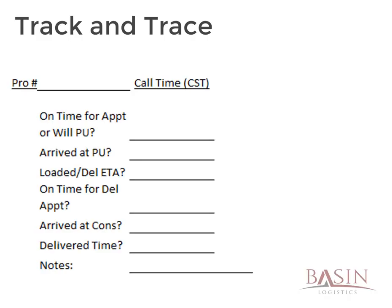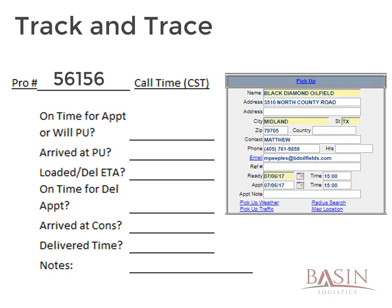To simply track multiple shipments at once, we have created a call time tracking form. Using pro number 56156 from the previous image shown, you will need to call at 2 o'clock to see if they are on time for the 3 o'clock appointment, call at 3 o'clock to see if they have arrived at the appointment, and then call at 5 o'clock to see if they have been loaded. These times are based on the check call times outlined earlier in the video, as well as Basin Logistics policy.